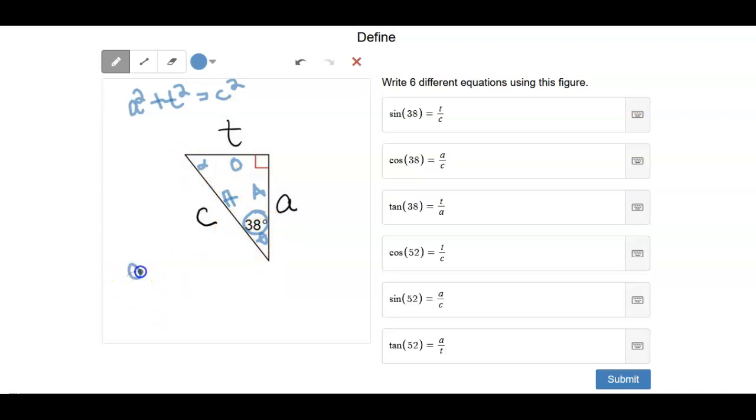alpha is equal to—so if this is our opposite, our adjacent, and our hypotenuse, it would be the inverse sine of a over c. We could also do alpha is equal to the inverse cosine of t over c, or we could do alpha is equal to the inverse tangent of a over t. So there's lots and lots of different equations that we could come up with for this one.